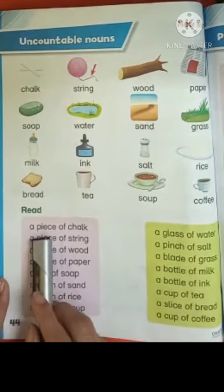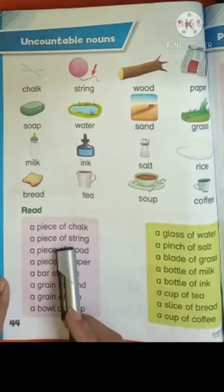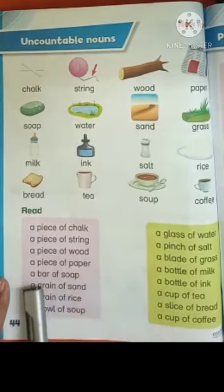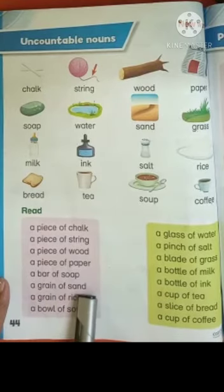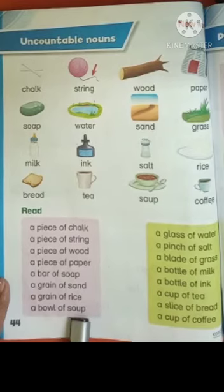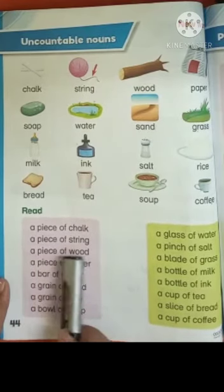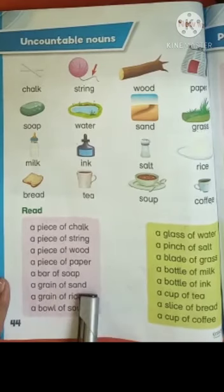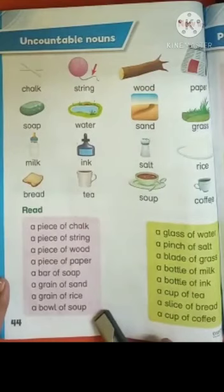Revise with you once again. A piece of chalk — chalk is a noun. A piece of string — string is a noun. A piece of wood — wood is a noun. A piece of paper — paper is a noun. A bar of soap — soap is a noun. A grain of sand — sand is a noun. A grain of rice — rice is a noun. A bowl of soup — soup is a noun. Stay blessed. Allah Hafiz.